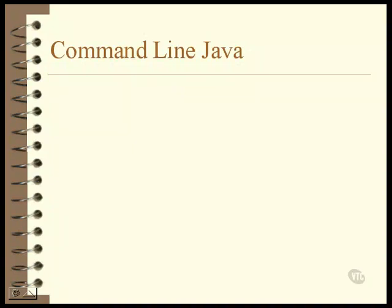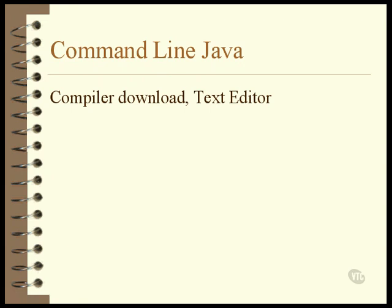If you want to write Java programs using a text editor and the command line compiler, this lesson is going to tell you what you need to do to get ready. There are only three things to consider: you need to download the compiler, decide on a text editor, and set the path variable. Once you've completed these three steps, you're ready to start writing and compiling Java programs.